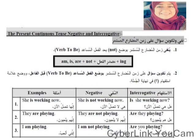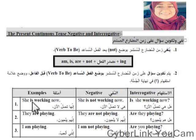طيب ازاي بعمل negative؟ بنحط not دايما بعد ال is, are, am. يعني: is not, are not, am not. مثال: she is working now — دي جملة مثبتة. عشان اعملها negative بنحط not بعد is: she is not working now.